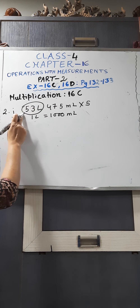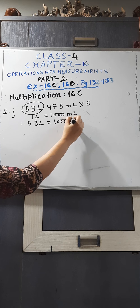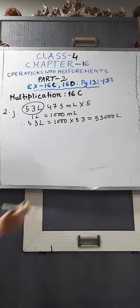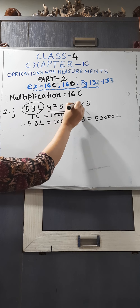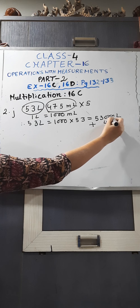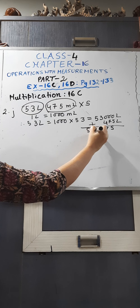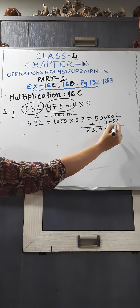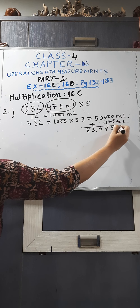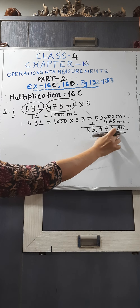53 litres is equal to 1000 into 53, which is equal to 53,000 millimetre. But here you can see that more millilitres are there — 475. So you will add this 475 millimetre. Our answer comes as 53,475 millimetre, as we are converting litre to millimetre. Our whole unit now comes as millimetre.